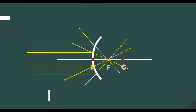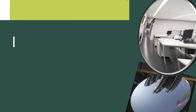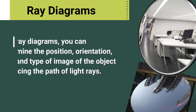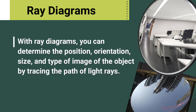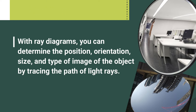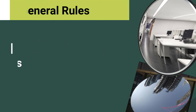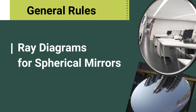How can we tell the nature of the image formed in spherical mirrors? Images formed by spherical mirrors can be constructed using ray diagrams. With the ray diagram method, you can determine the position, orientation, size, and type of image of an object by tracing the path of the incident and reflected light rays. You can also determine the properties of the image using the mathematical mirror equation. But in this video, we will focus on the ray diagram method and its general rules for image formation on spherical mirrors.